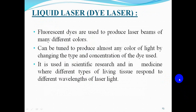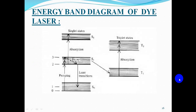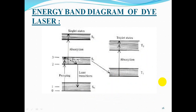Liquid lasers use fluorescent dyes to produce laser beams of many different colors. They can be tuned to produce almost any color of light by changing the type and concentration of the dye used, and are used in scientific research and medicine. In the 4-level energy diagram of a dye laser, singlet states are S0, S1, and S2, and triplet states are T1 and T2. When the total spin of the excited electron is 0, a singlet state occurs; when unity, a triplet state occurs. The molecule is excited from ground state S0 to S1, and laser transition occurs from S1 back to S0. Triplet states are not directly involved in laser action, though there is a small probability of transition from S1 to T1.